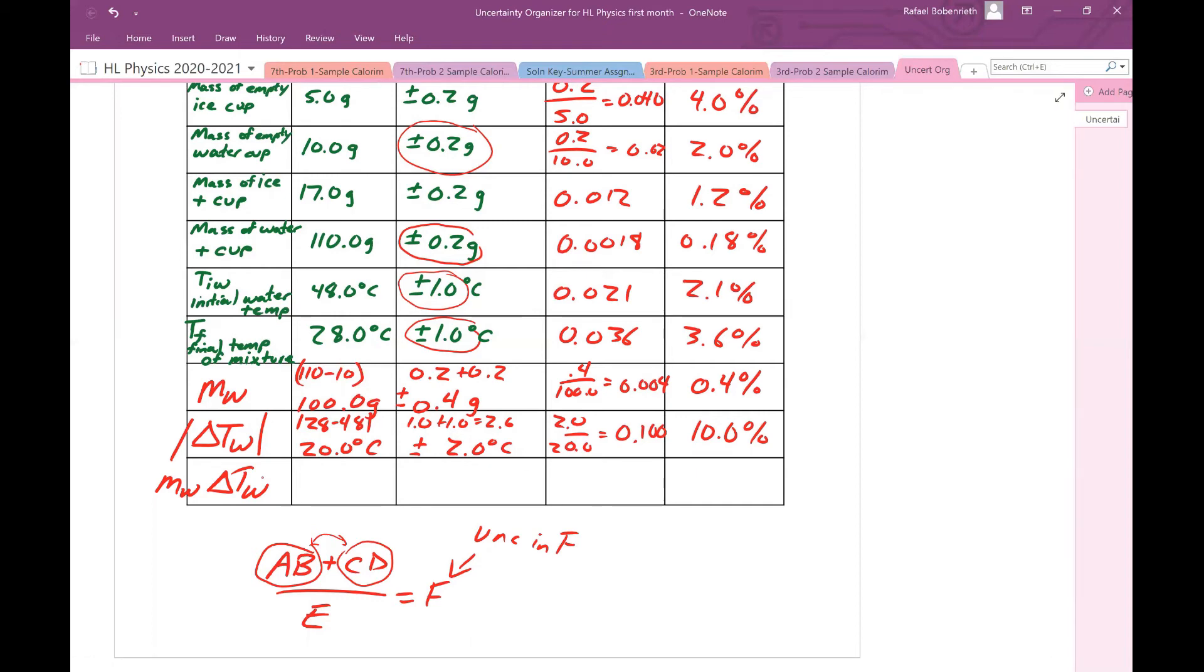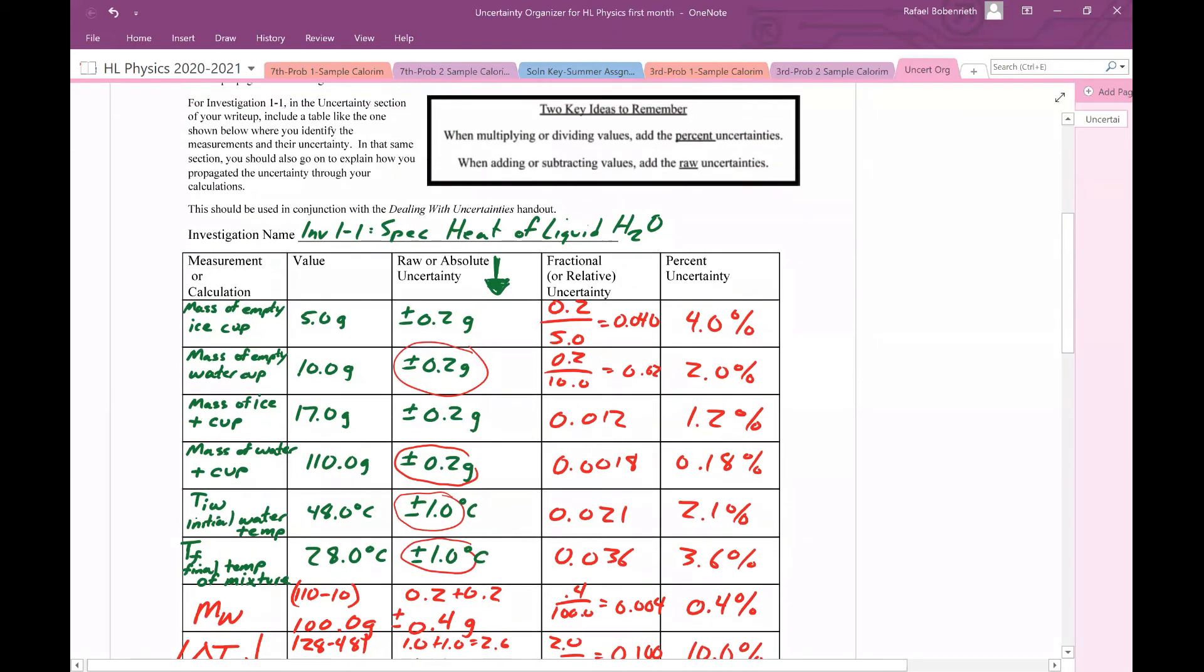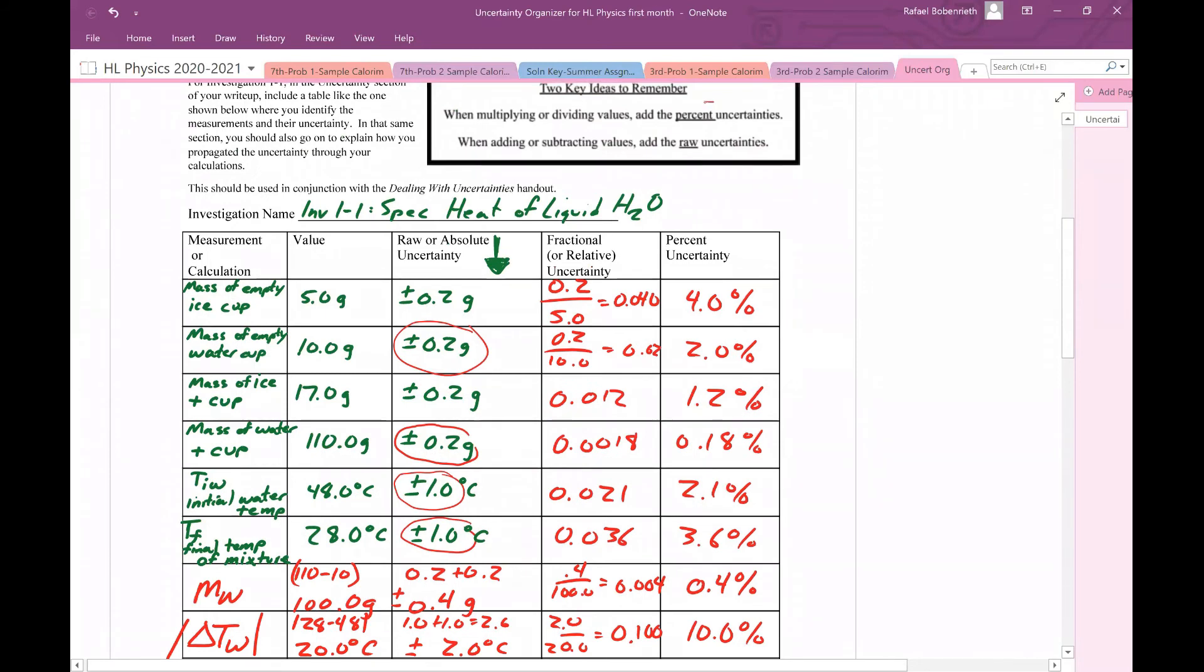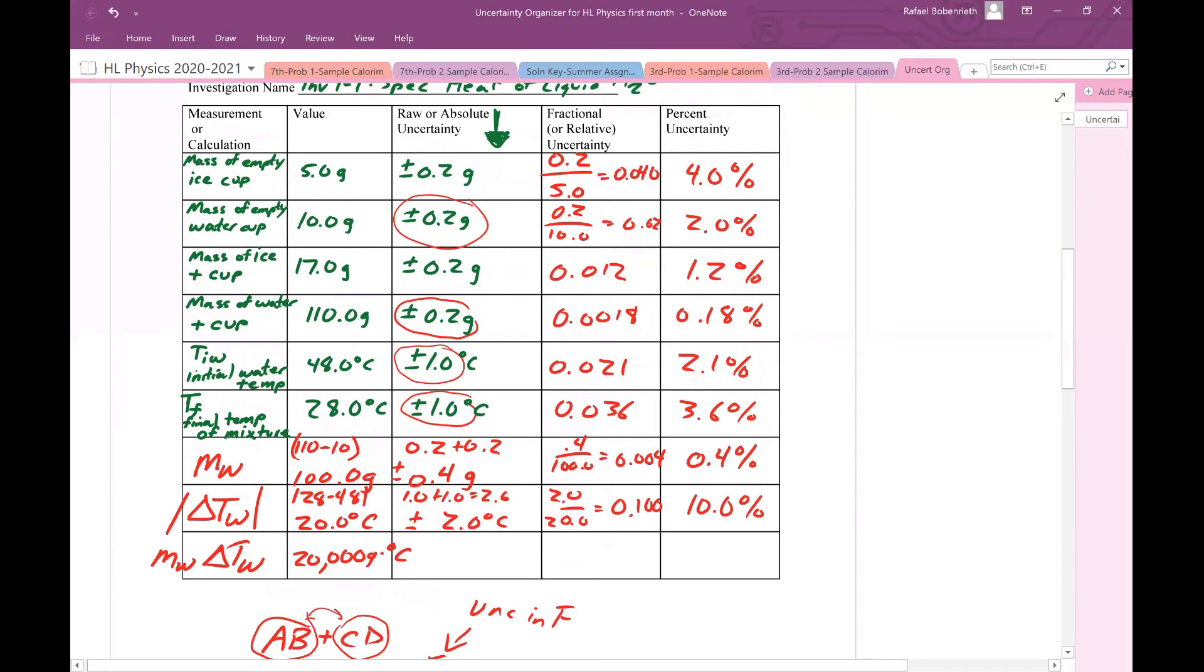So how do I do that? The mass of the water is 100, and the change in temperature of the water is 20. So this is going to be 100 times 20 is 20,000 grams times degrees Celsius. Now what do I do here? I multiplied. So now I'm doing something different. Since I multiplied two numbers, what do I have to do? Look up here. I have to add the percent uncertainties.